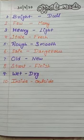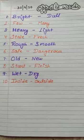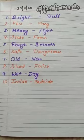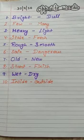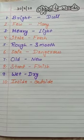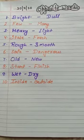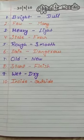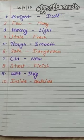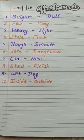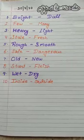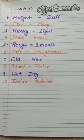Third one is heavy, light. H-E-A-V-Y, heavy. Heavy means bhaari. L-I-G-H-T, light. Light means halka. And light also means roshni.